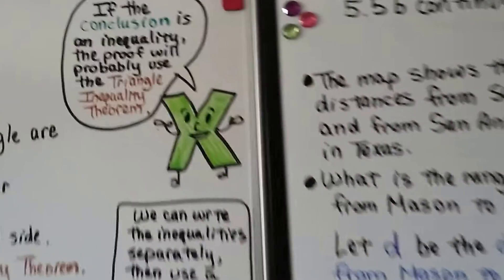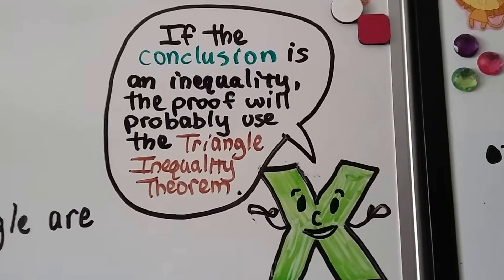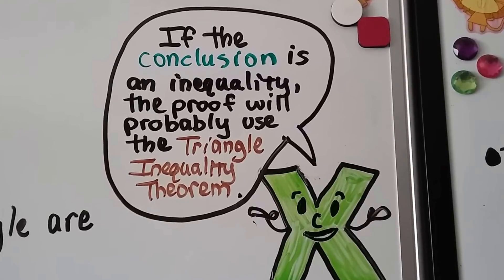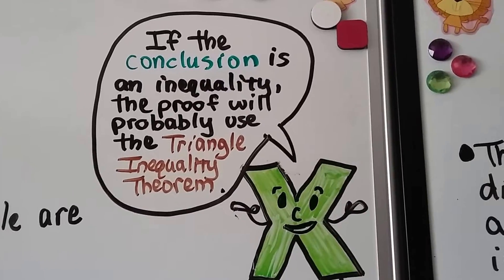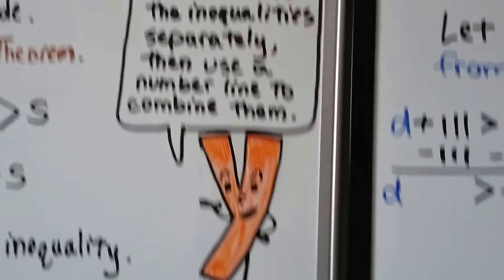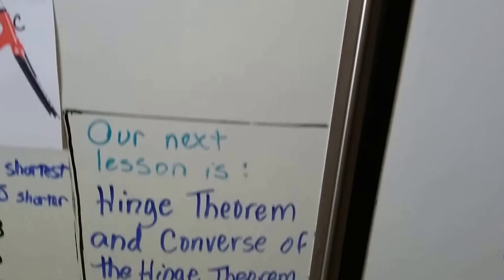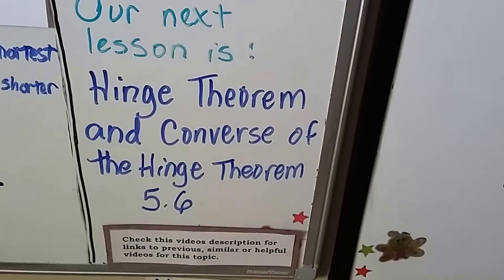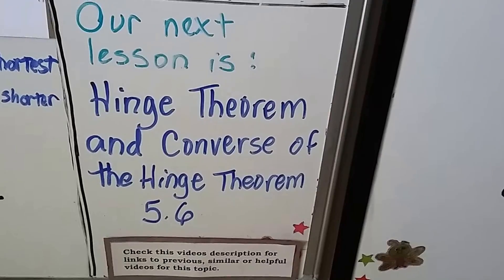If the conclusion is an inequality, the proof will probably use the triangle inequality theorem. Our next lesson is about the hinge theorem and the converse of the hinge theorem. It's 5.6.